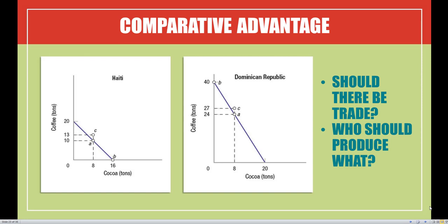Let's take a look at the big trade question for this chapter. We're going to compare two different countries: Haiti on the left-hand side and the Dominican Republic on the right-hand side. Each of these countries can produce two goods — coffee on the vertical axis and cocoa on the horizontal axis — and we have the production possibilities frontier, or PPF, for each country.